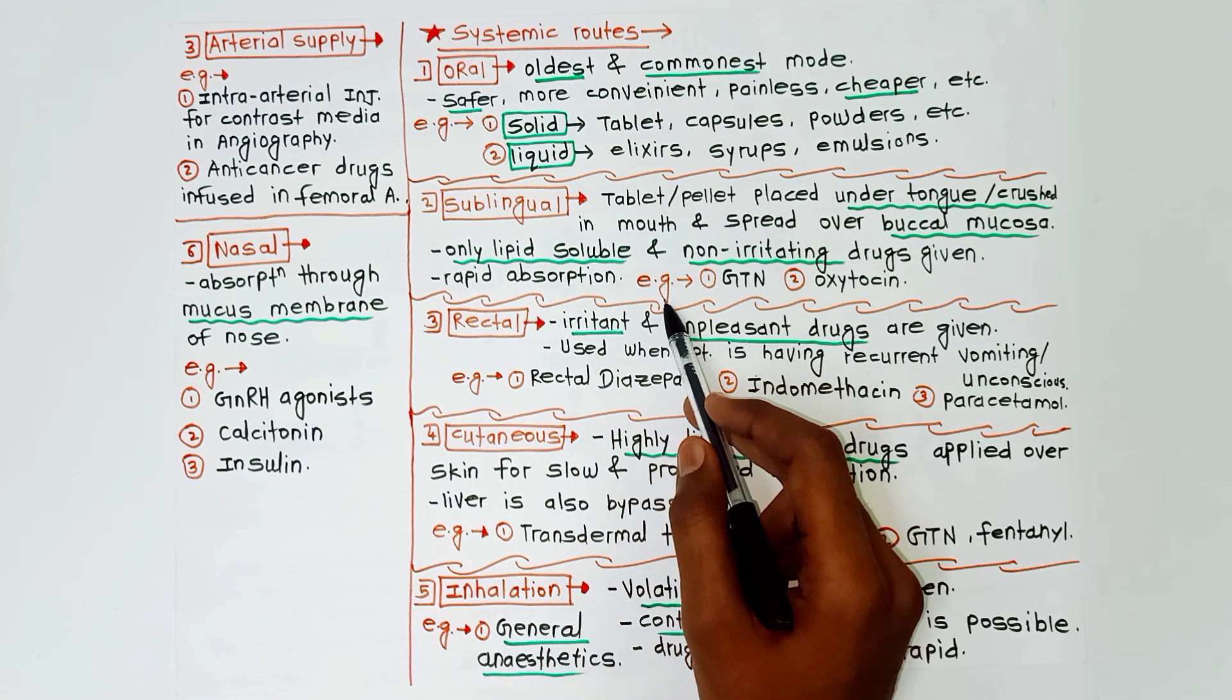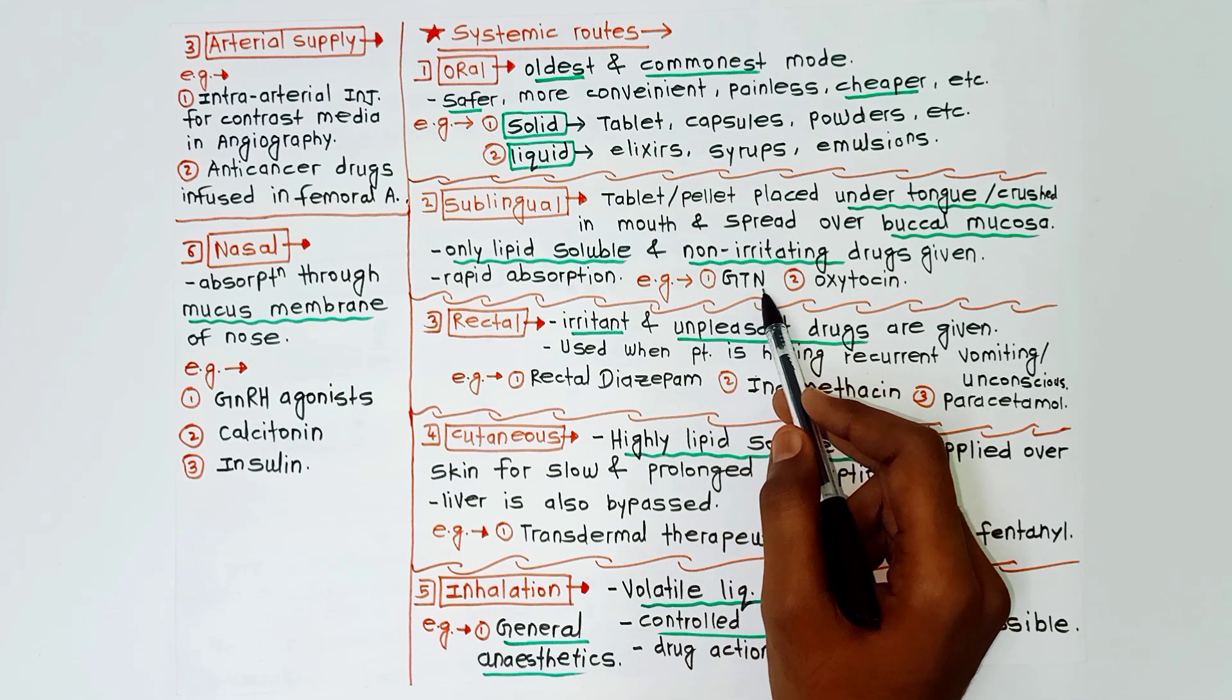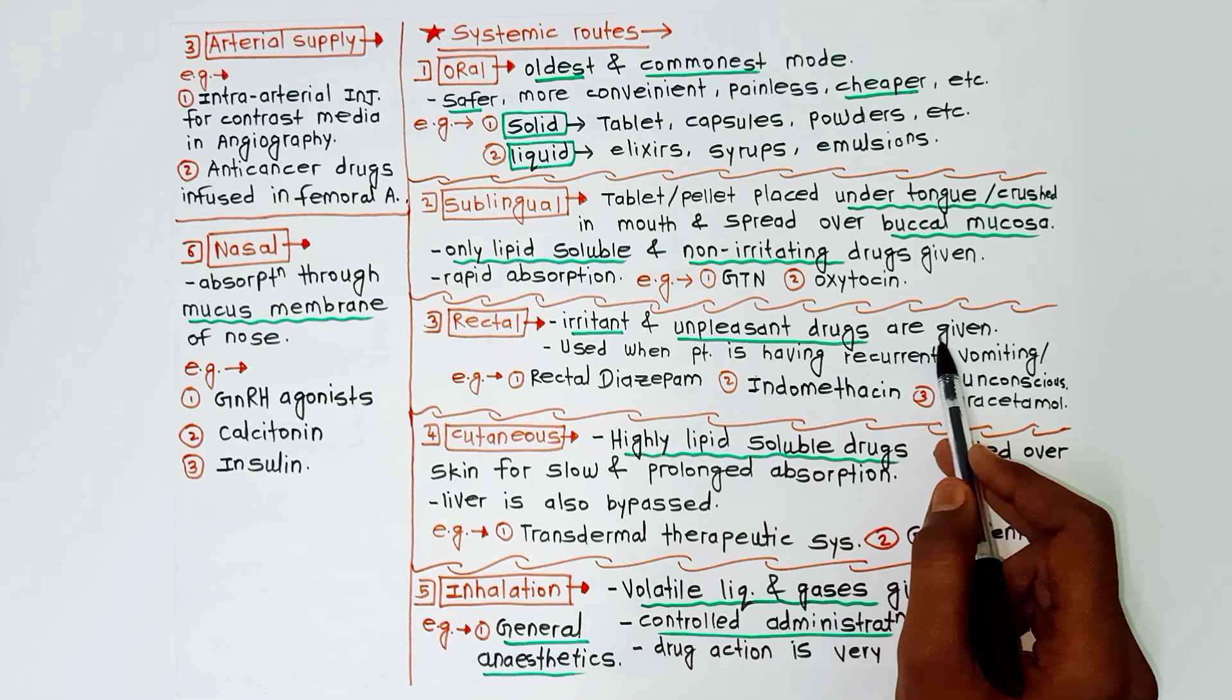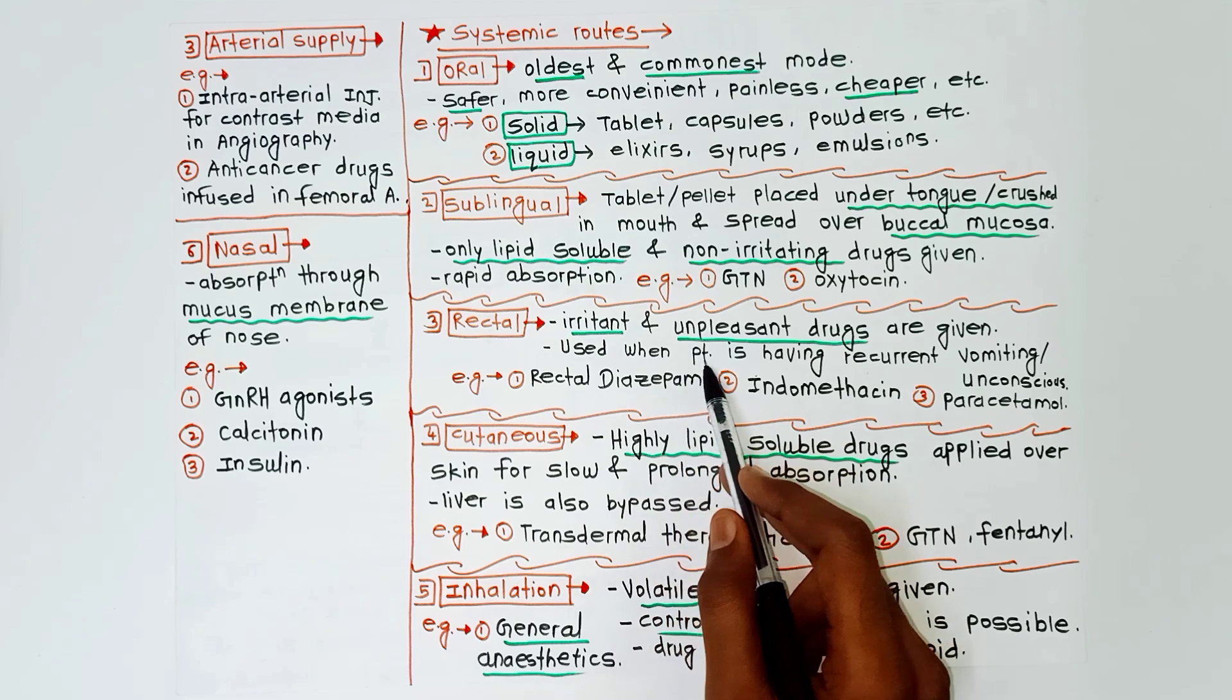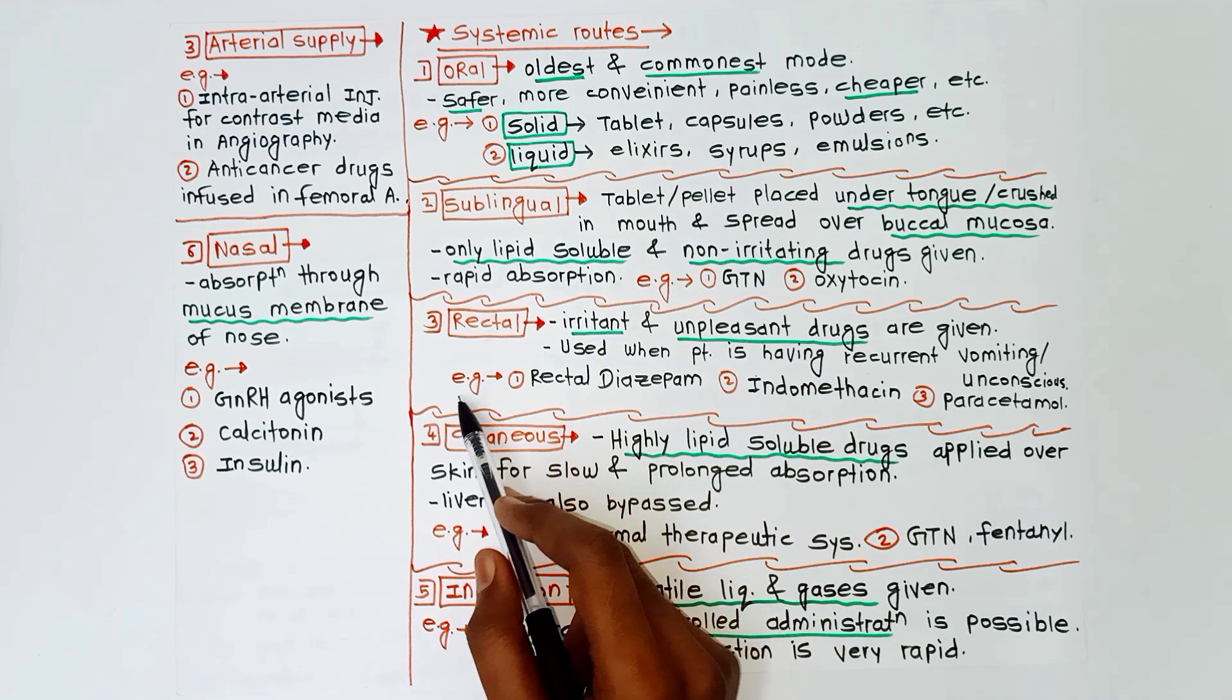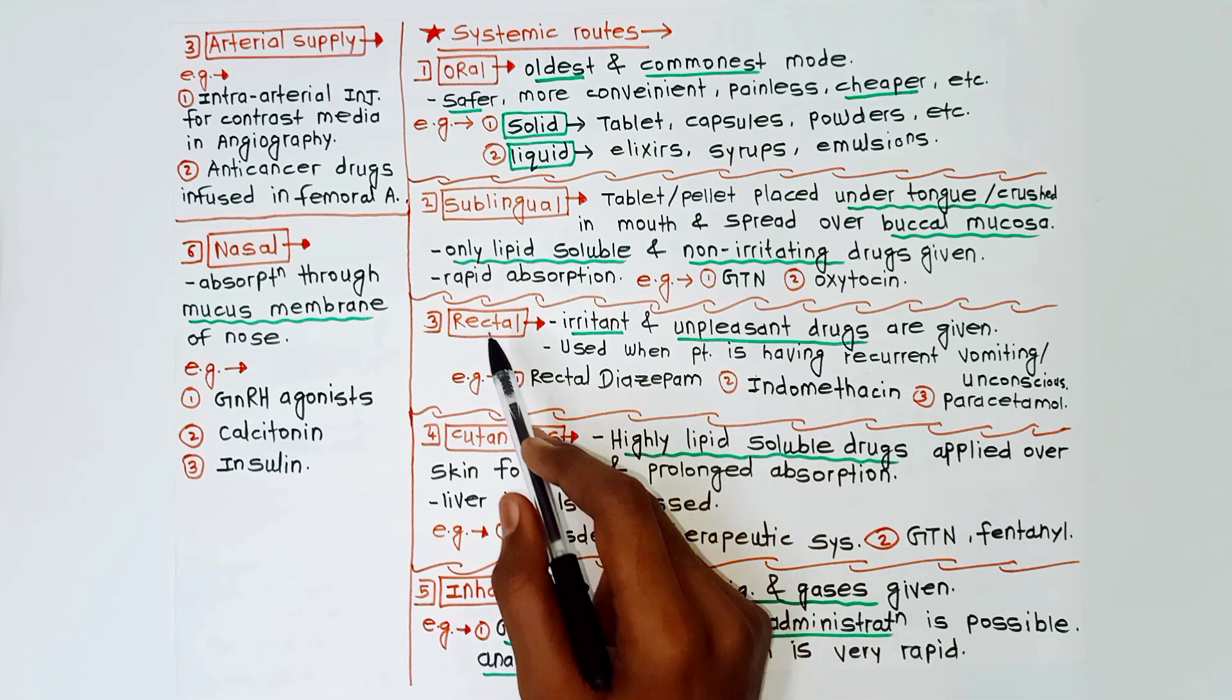Next is rectal route. In this, irritant and unpleasant drugs are given. This route is used when the patient is having recurrent vomiting or the patient is unconscious. Examples of rectal route are rectal diazepam, indomethacin, and paracetamol.